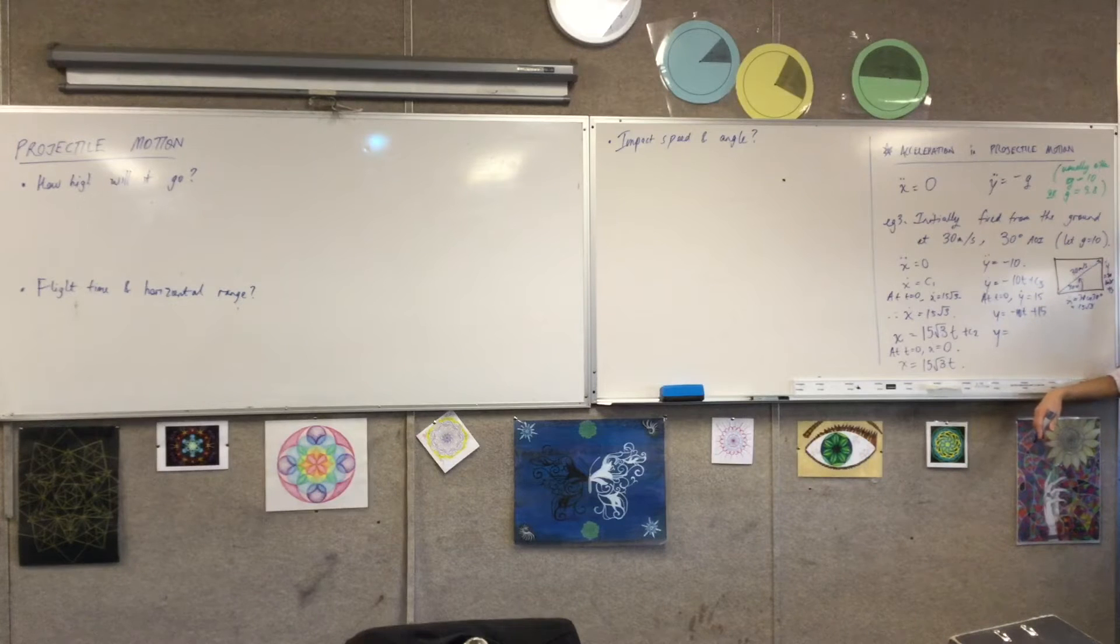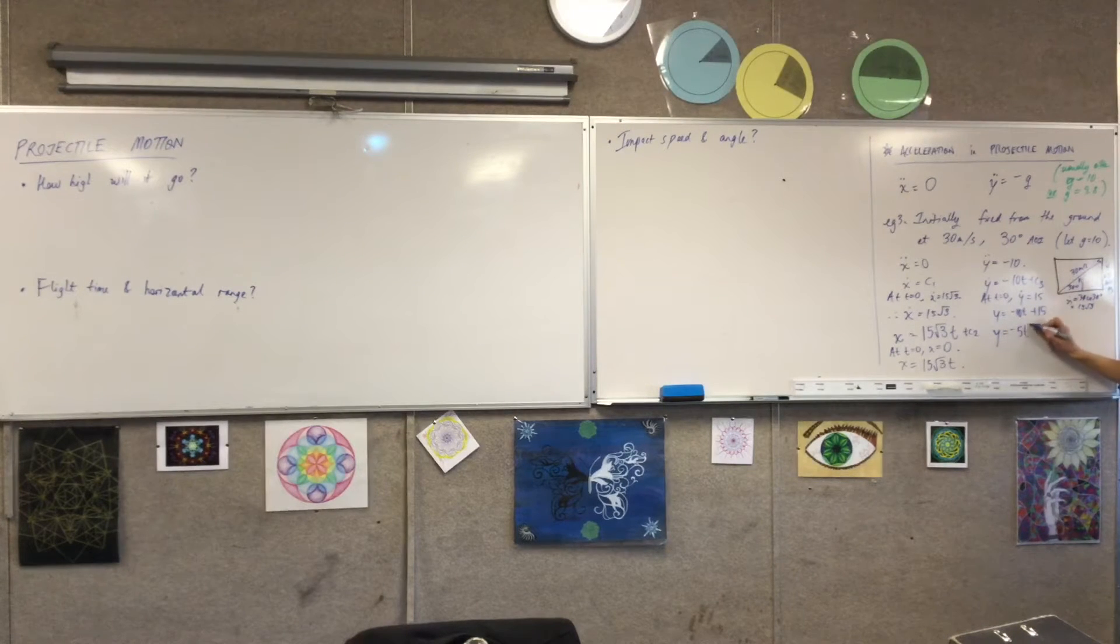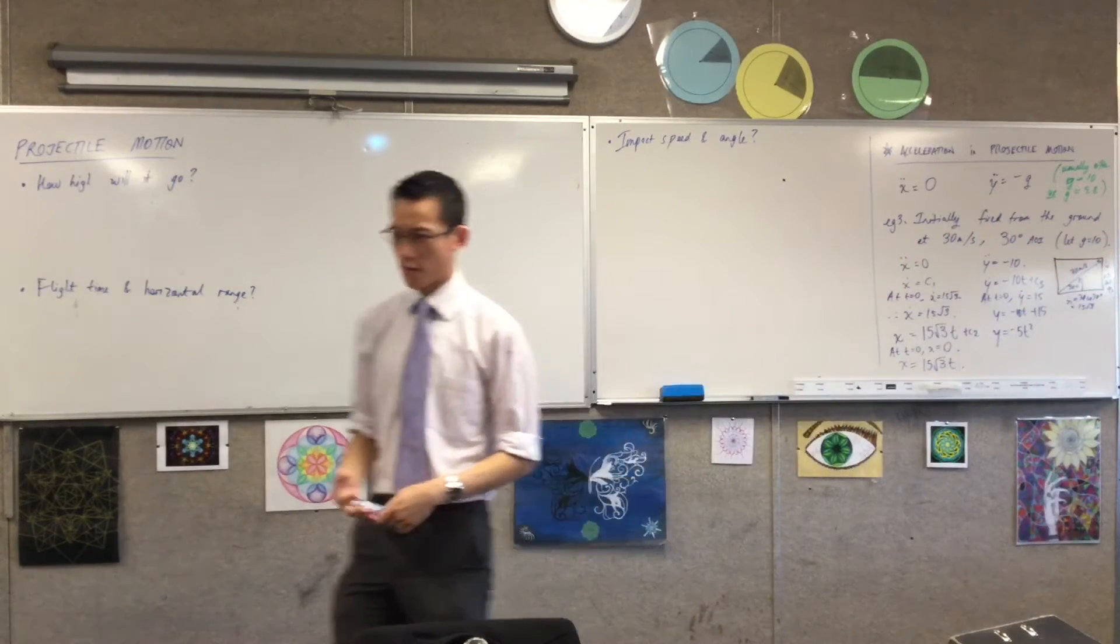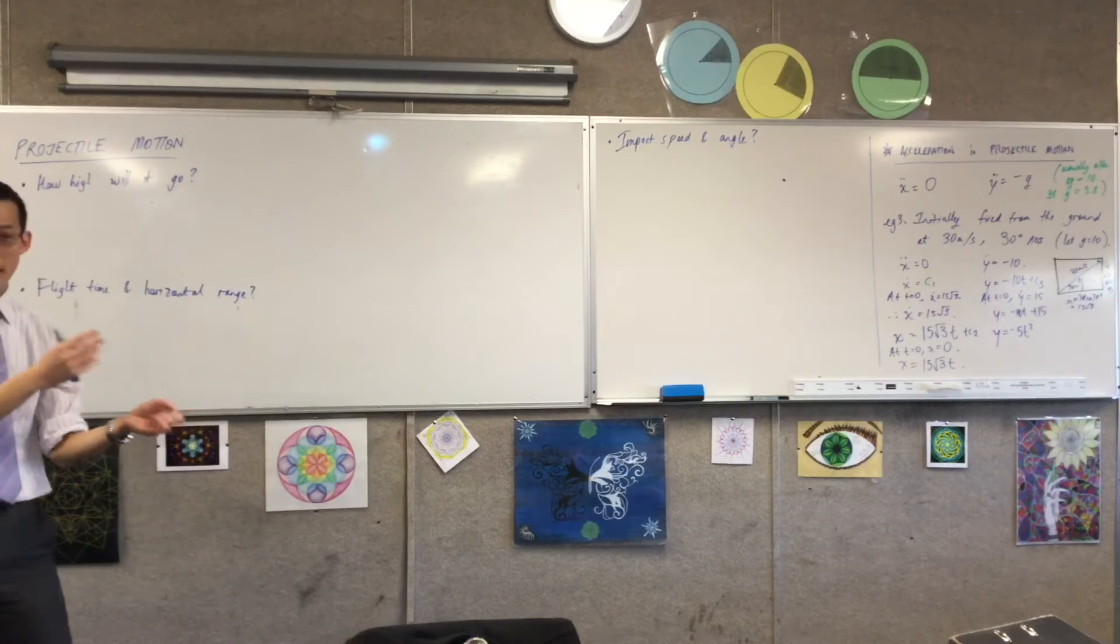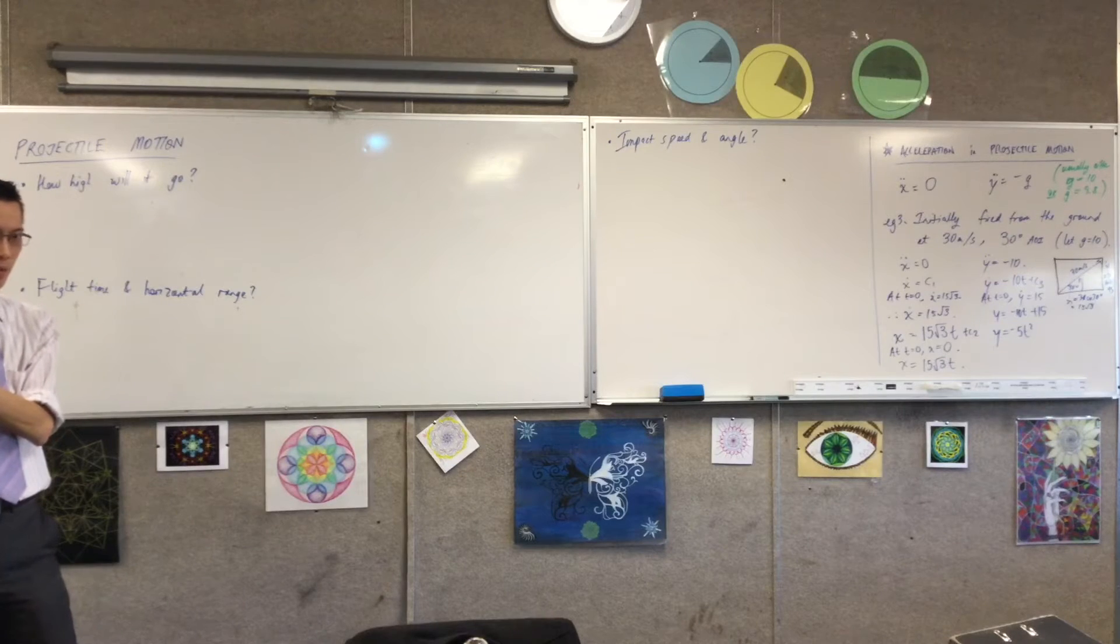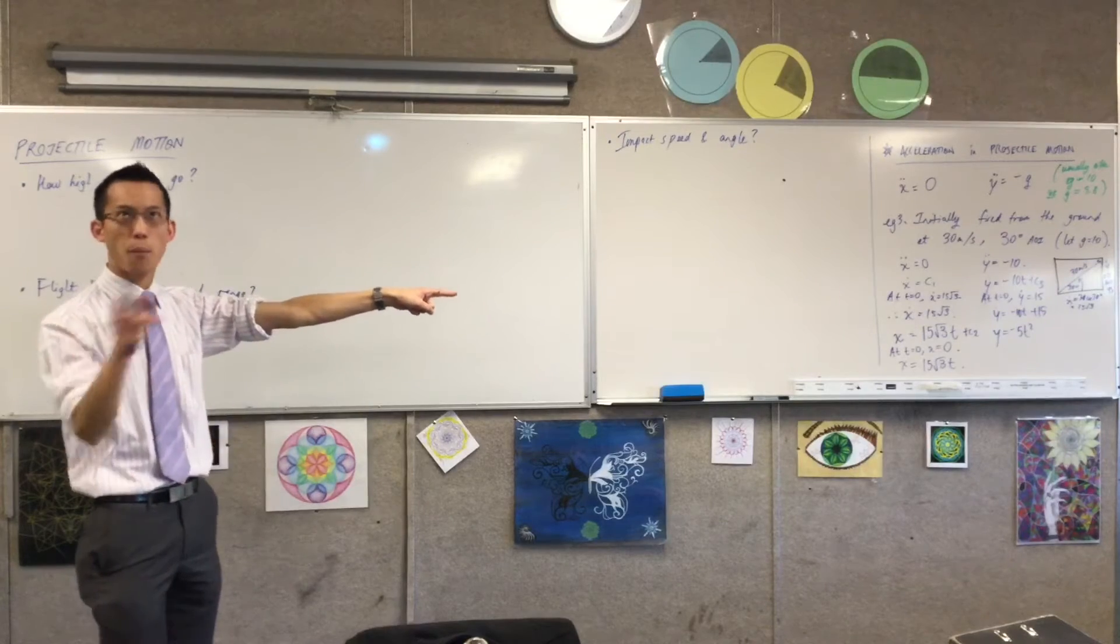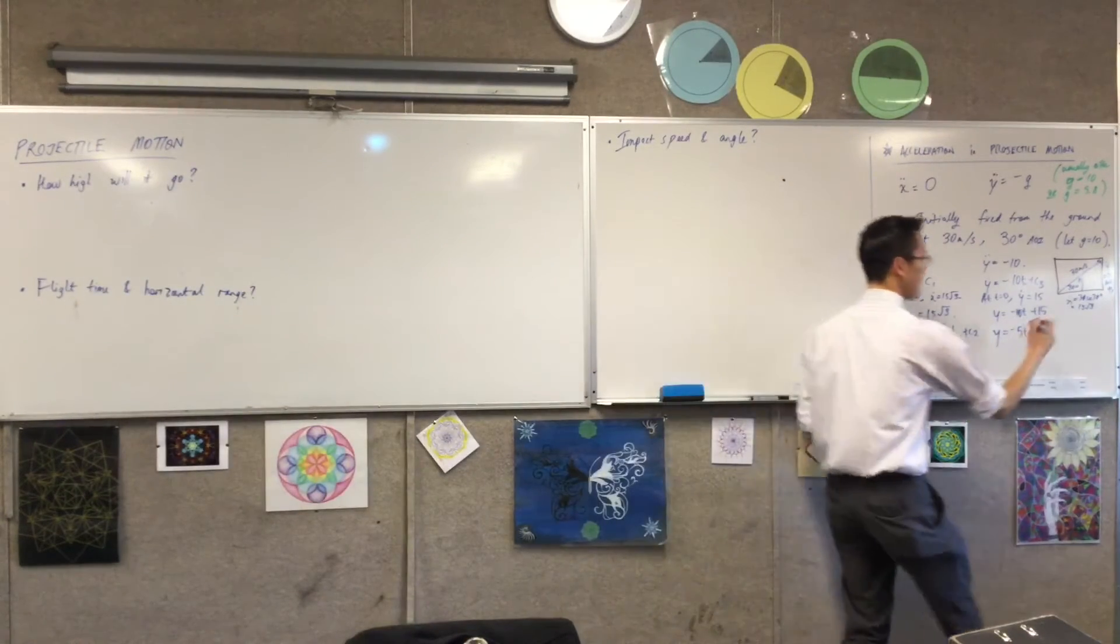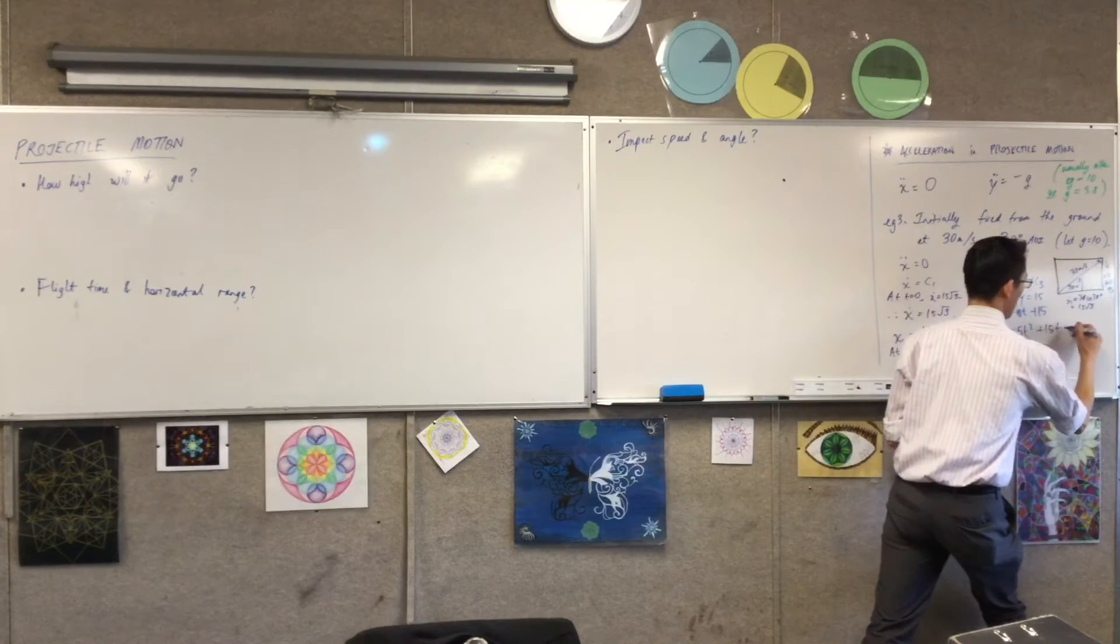And negative 10t turns into... So this guy here, this negative 5t squared, it seems a bit random, but it always emerges out of gravity. So you know, two-thirds of the time you'll see this negative 5t squared. The other third of the time, you'll see not 10 being your starting point, but 9.8 being your starting point. So this is going to be negative 4.9t squared. Okay, so you will get these coming up again and again and again. Plus what? Plus what?